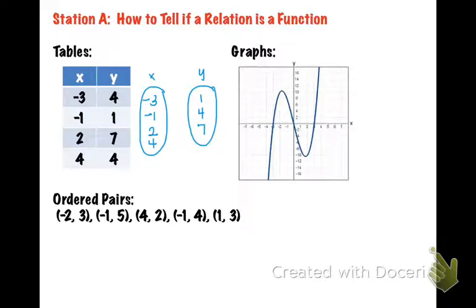Now what we're going to do is use arrows to match up the numbers from the x's with the y values that they go with. So if we look in the table, negative 3 goes with 4, so I'm going to go from negative 3 and make my arrow that points to 4. Negative 1 goes to 1, 2 goes to 7, and 4 goes to 4.